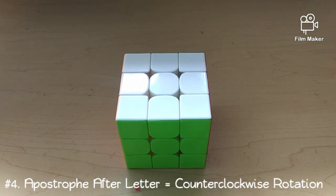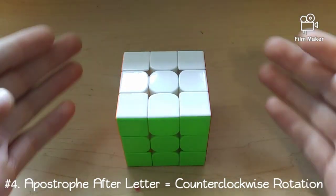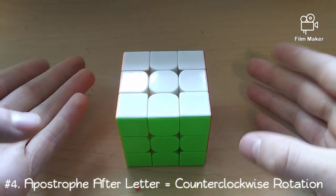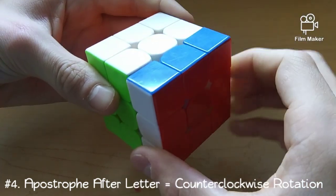Rule number 4, an apostrophe after the letter given, as shown here, signifies prime, or inverted, which means you rotate the layer given counterclockwise, like this.